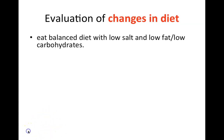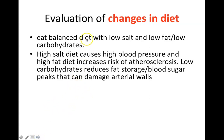So, evaluation of changes in diet: eating a balanced diet with low salt, low fat, and low carbohydrates will reduce the risk of hypertension. A high salt diet causes high blood pressure, and a high fat diet increases the risk of atherosclerosis. Low carbohydrate intake reduces fat storage and blood sugar peaks that can damage arterial walls. So we need to lower salt, fat, and carbohydrates.